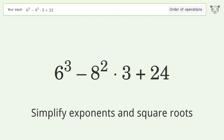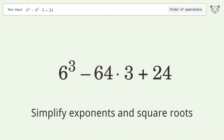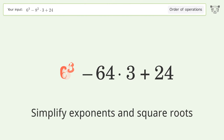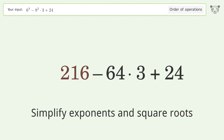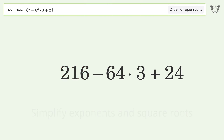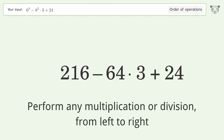First, simplify exponents and square roots: 8 to the power of 2 equals 64. Then, 6 to the power of 3 equals 216. Next, perform any multiplication or division from left to right: 64 times 3 equals 192.